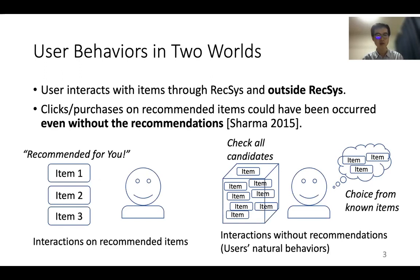A user interacts with items through recommender systems and outside of them. The left figure illustrates interactions on recommended items — a recommender system chooses several items for a user, and the user might choose some of them. The right figure illustrates interactions without recommendations: a user might check all candidates, especially when the number is small. For example, in a restaurant, we might look through all dishes in the menu list. A user might also choose from items they already know. Because of these natural behaviors, clicks or purchases on recommended items could have occurred even without the recommendations.